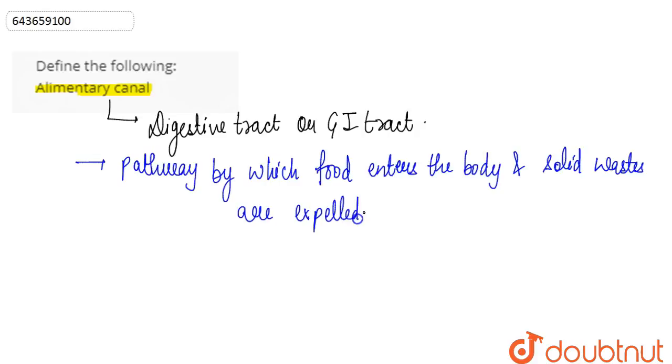The GI tract or the alimentary canal includes the mouth, pharynx, esophagus, stomach, small intestine, large intestine, and the anus.